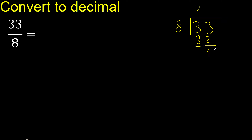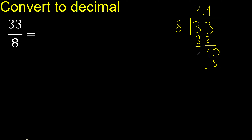There is no number, therefore always complete with 0 here — with 0, point. 10: 8 multiplied by which number? 8 multiplied by 1 is 8 — is not greater. 10 minus 8 is 2. Next.